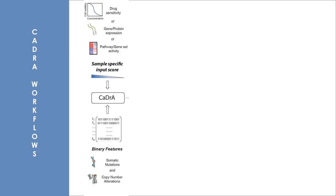Here is an overview of the CADRA workflow. CADRA takes two inputs. The first is a binary multiomics dataset where the rows are one-or-zero vectors indicating the presence or absence of omics features such as somatic mutations, copy number alterations, epigenetic marks, etc.